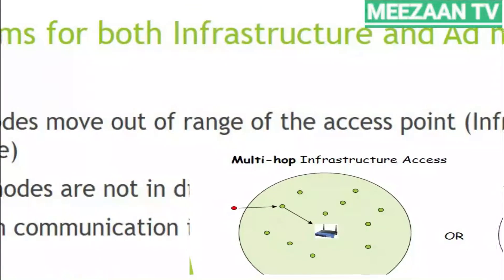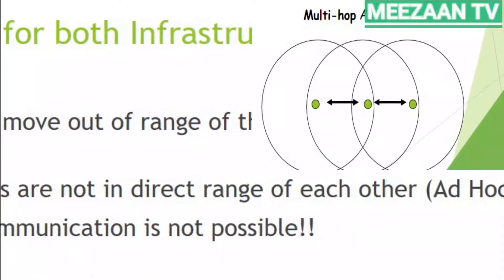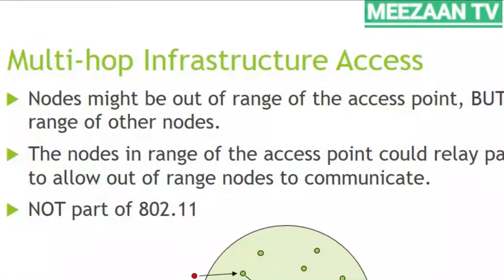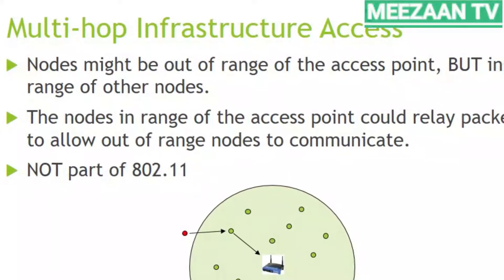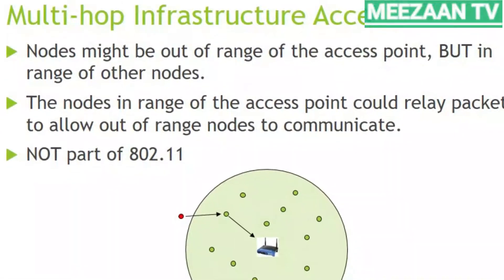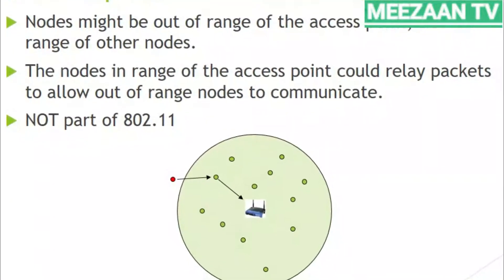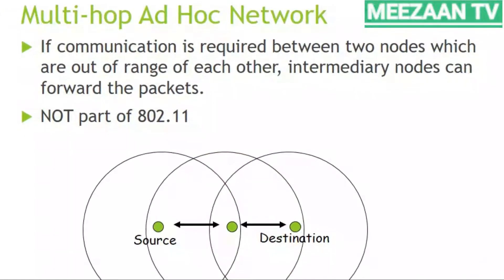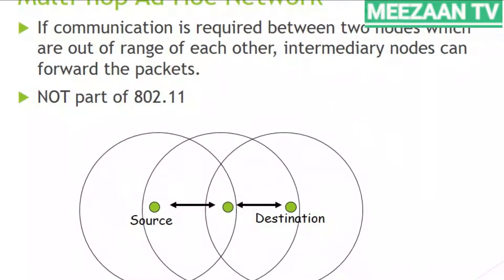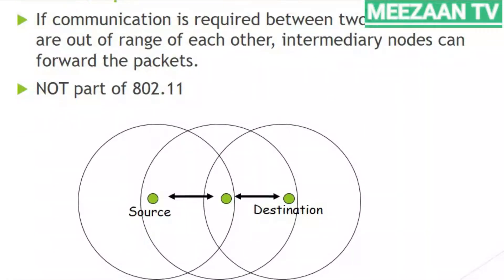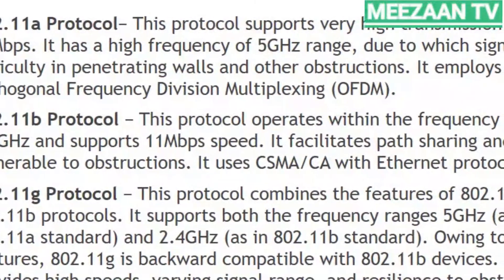In infrastructure mode, a node may move out of range of the access point. In ad-hoc mode, nodes may not be in direct range of each other. For infrastructure-based wireless LAN, a node out of range of the AP may be in range of other nodes, and those nodes could relay packets — but this is not part of 802.11. Similarly in ad-hoc mode, intermediate nodes could forward packets, but this is also not part of 802.11.